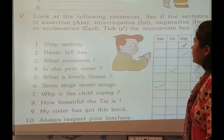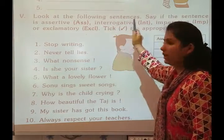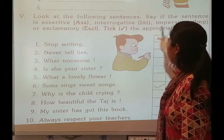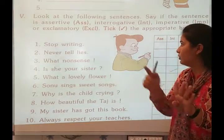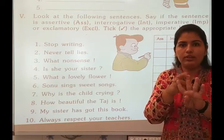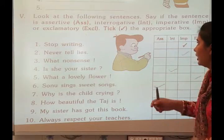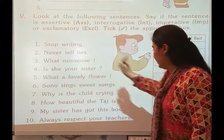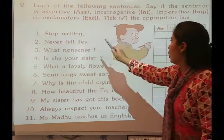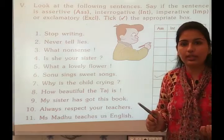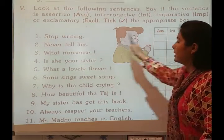Now for the last exercise: look at the following sentences and say whether each sentence is assertive, interrogative, imperative, or exclamatory. There are four columns given. For example: 'Stop writing' — this is an imperative sentence.